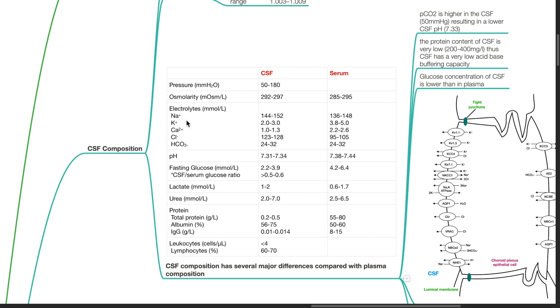CSF chloride is 123 to 128 mOsm per liter, while serum chloride is 95 to 105 mOsm per liter.